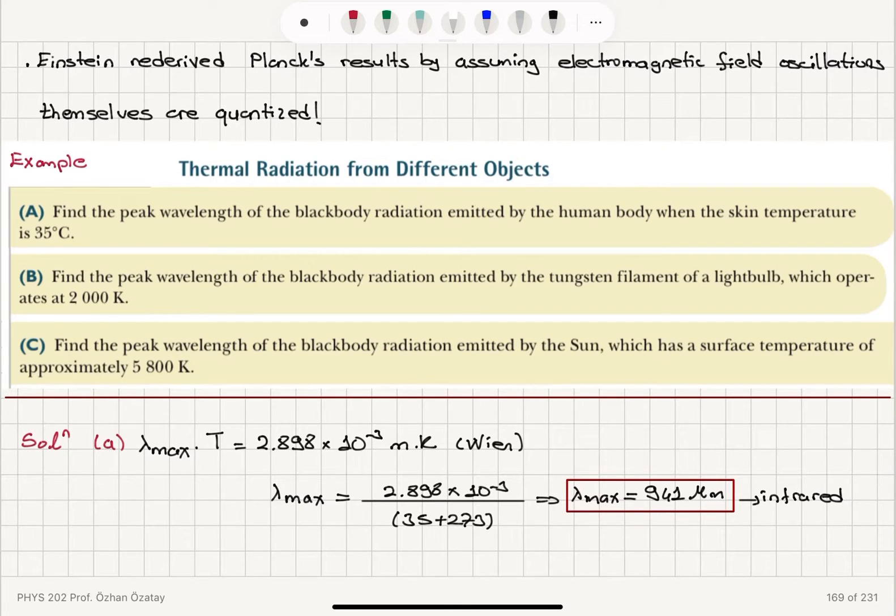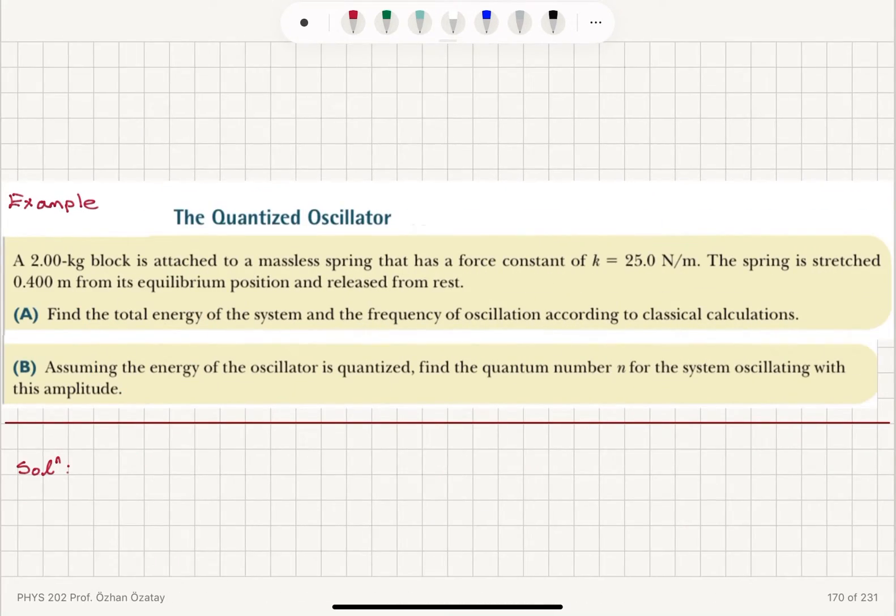This is part B of the problem. Find the peak wavelength of the blackbody radiation emitted by the tungsten filament of a light bulb, which operates at 2000 Kelvin. I'm going to use Wien's displacement law again. For a tungsten filament, lambda max, the peak wavelength, is 2.898 times 10 to minus 3. This time the temperature is already in Kelvin, so 2000 Kelvin. This will give me a peak wavelength lambda max of 1.45 micrometers.